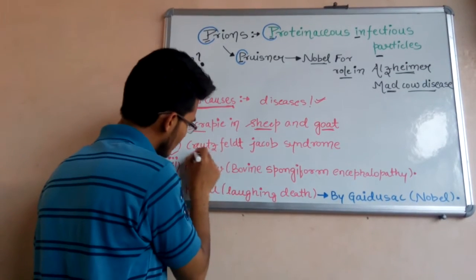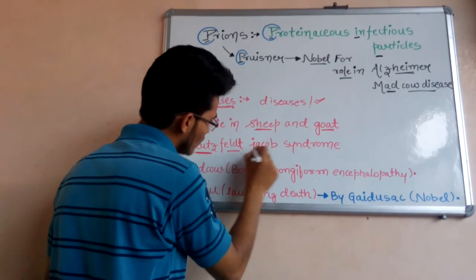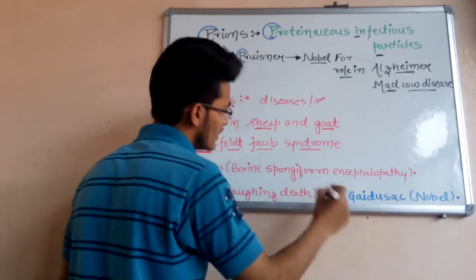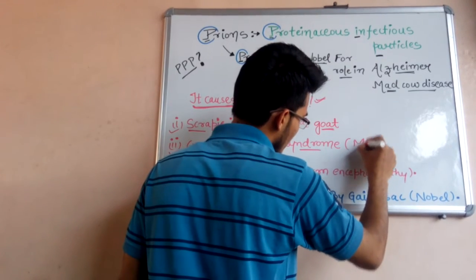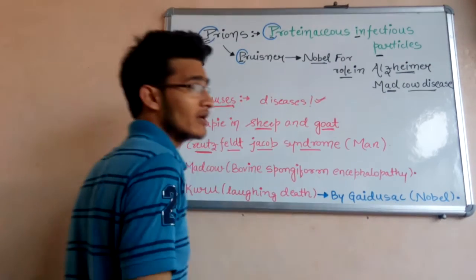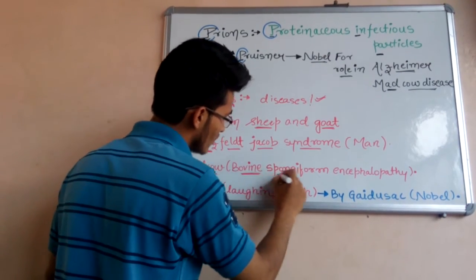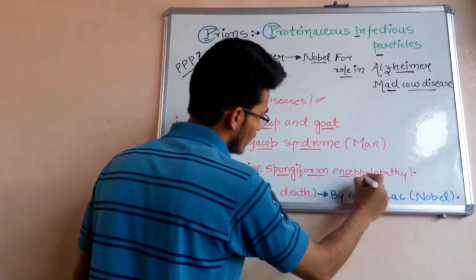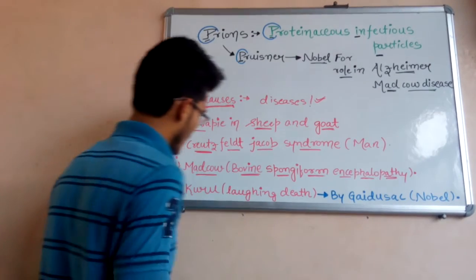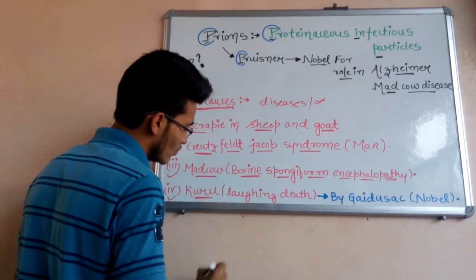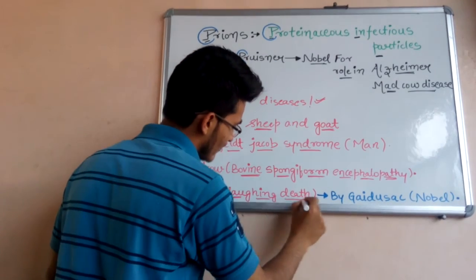The second disease is very important, that is Creutzfeldt-Jakob syndrome, which is a disease caused by prions in man. The third one is mad cow disease, which is also known as bovine spongiform encephalopathy. And the last one is kuru, which means laughing death.